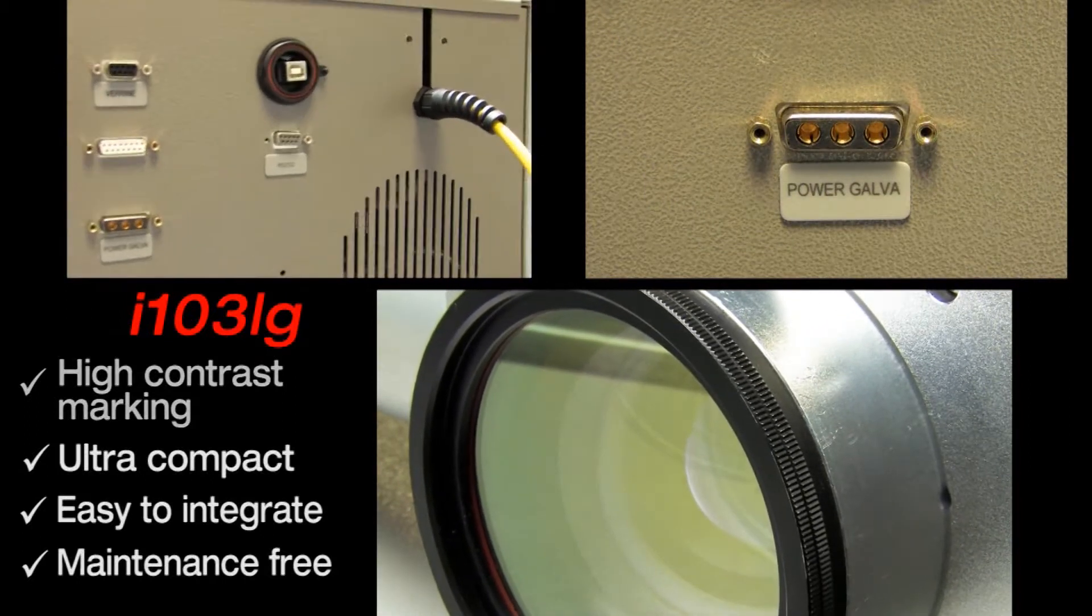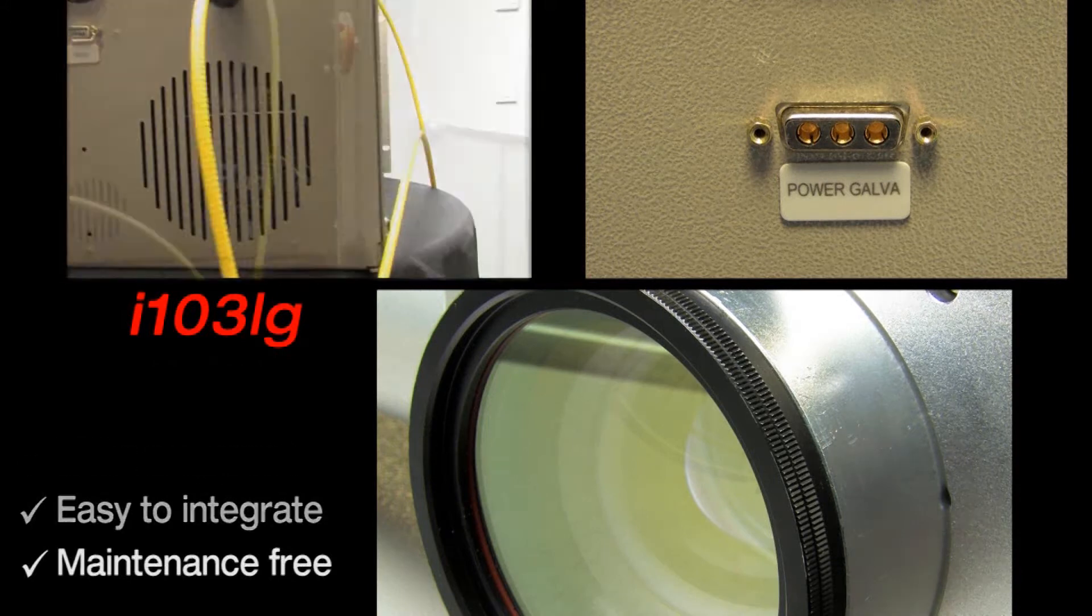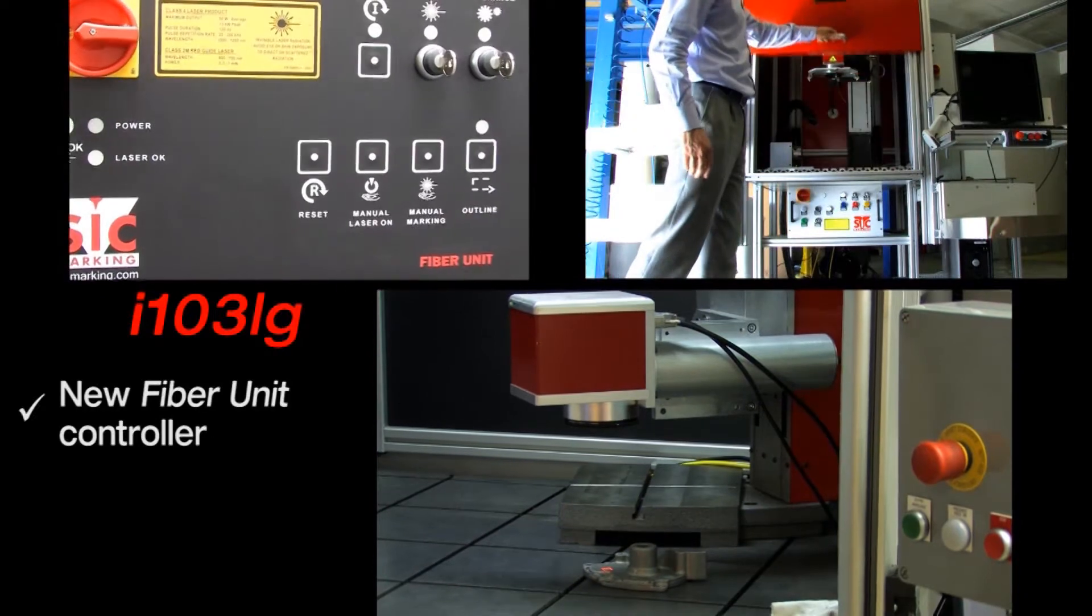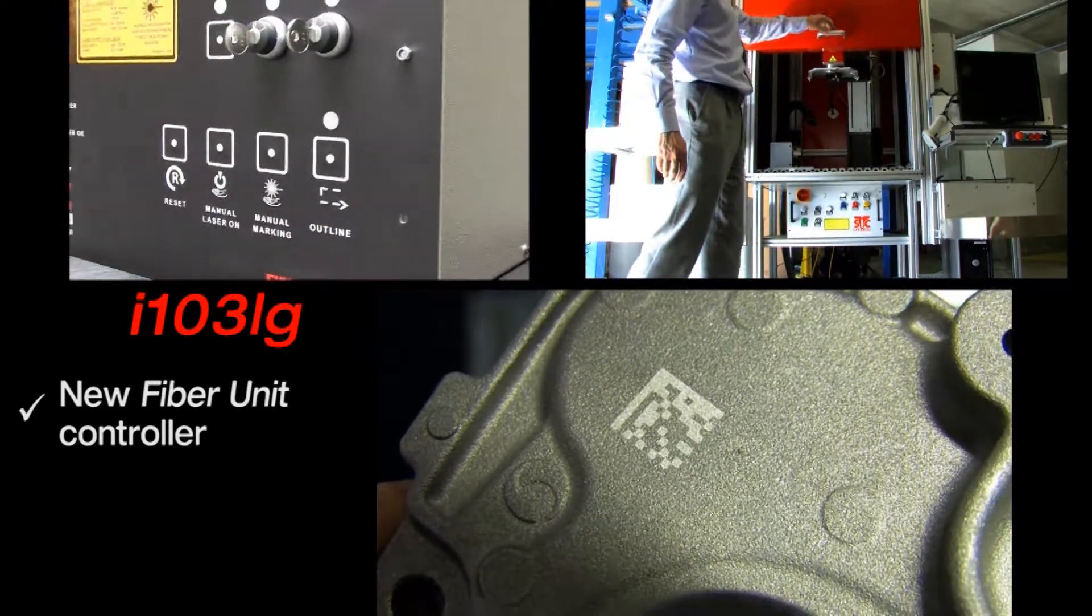The class 4 laser i103LG is compact with optimized size and weight of 5 kilos in order to meet specific integration requirements.